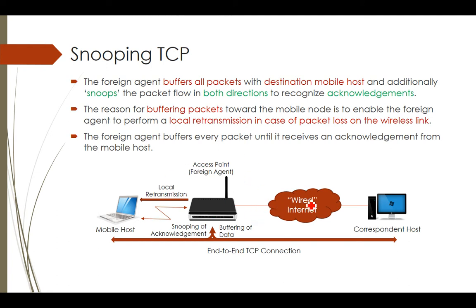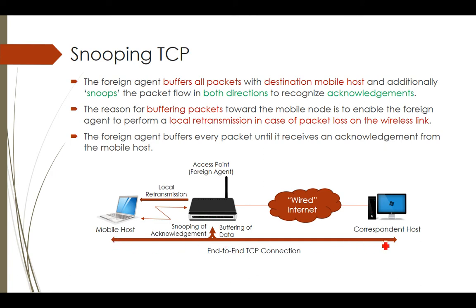In this figure, the correspondent node is connected to the wired internet. The access point is also connected to the wired internet. This entire part is connected through wires, and the mobile host is connected wirelessly. Data is communicated between the mobile host and the correspondent host. The two-headed arrow shows that the end-to-end TCP connection is established.